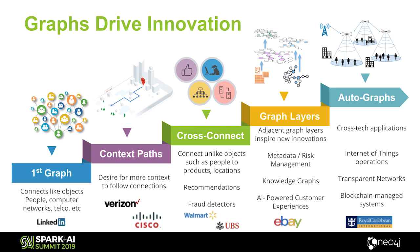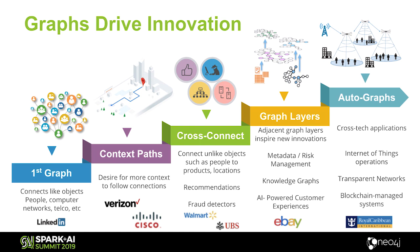If we think about graphs in general, what we've seen in Neo4j over time is that customers use graphs in a variety of different ways. They usually start off a little more simplistically, just connecting things that are very similar and doing analysis. Then they try to get more complex and look for contextual paths, then cross-connect different types of items like products and customers, or different types of genes, diseases, and drugs. And then they start to layer on graphs, continually adding different layers and getting more out of the data they already have.